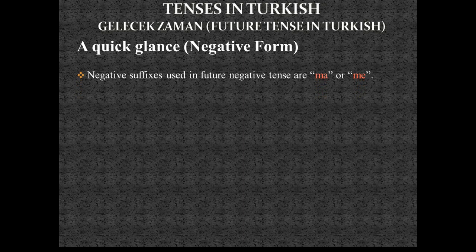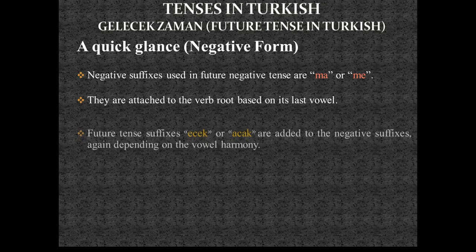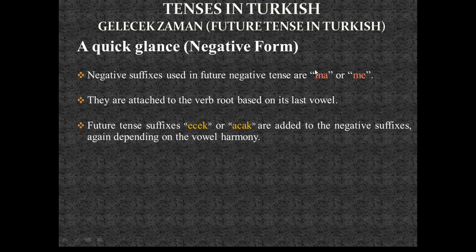Let's start with a quick glance at the negative form in Turkish. The negative suffixes used in future negative tense are 'ma' or 'me' — they are attached to the verb root based on the verb root's last vowel letter. Future tense suffixes after these negative suffixes are 'acak' or 'ecek,' added depending on the vowel harmony rule.